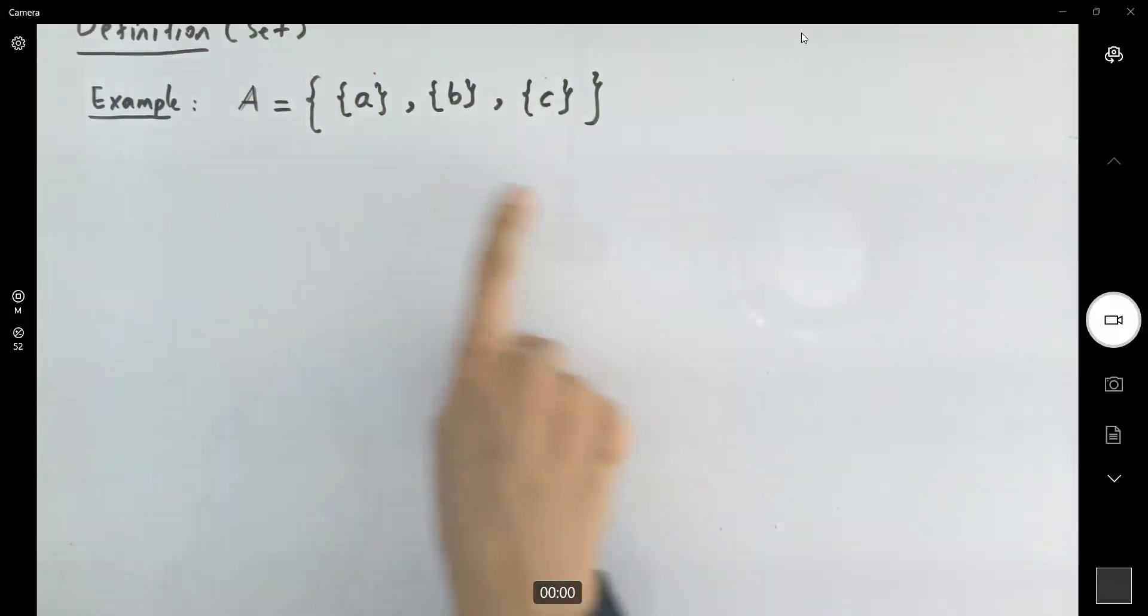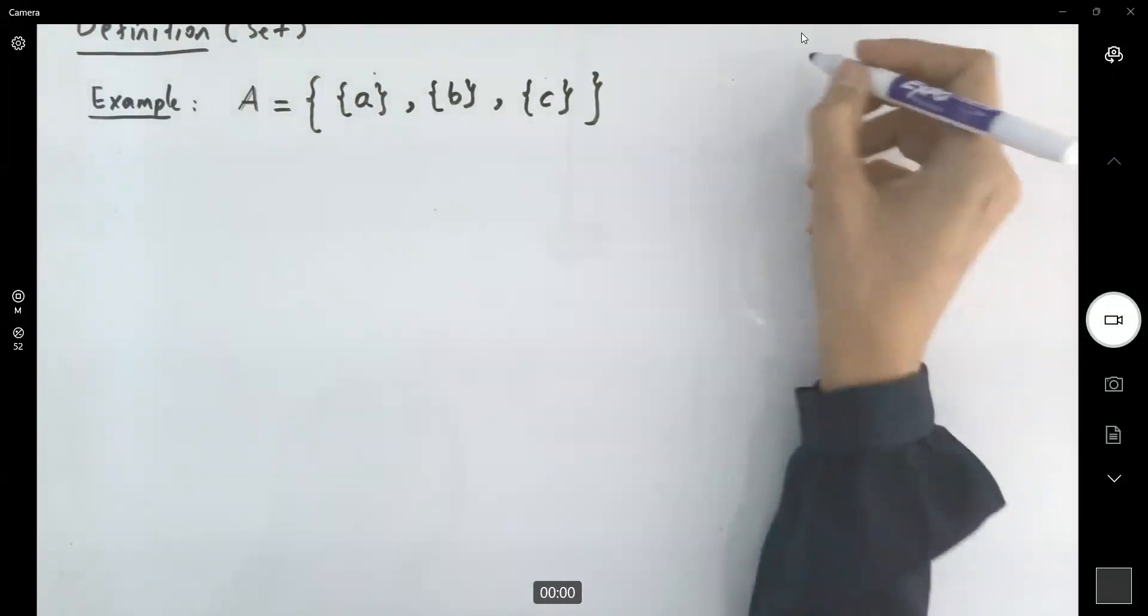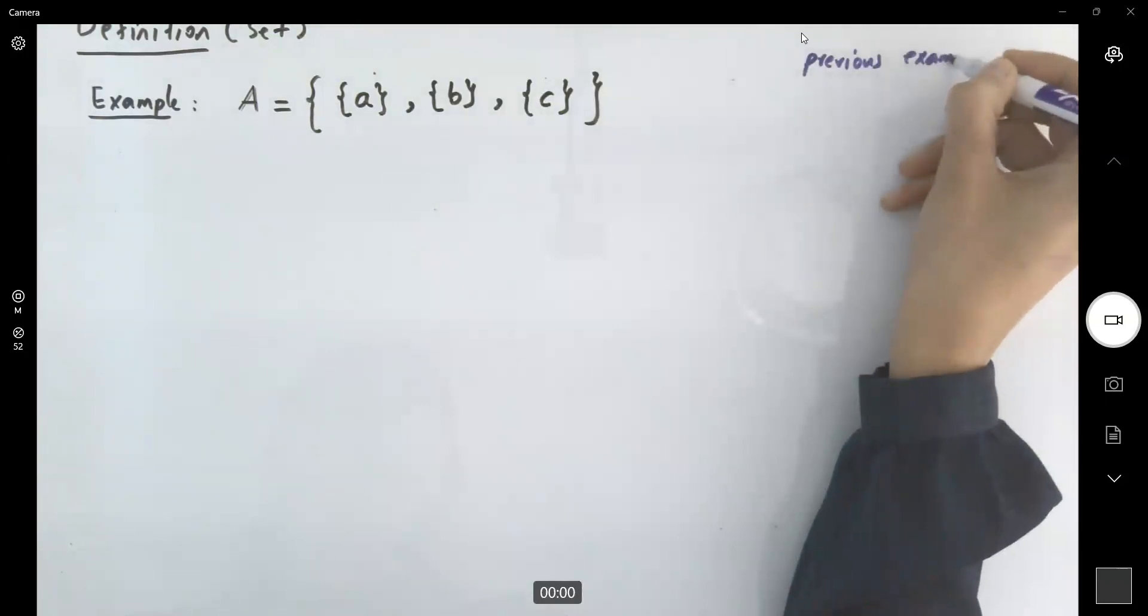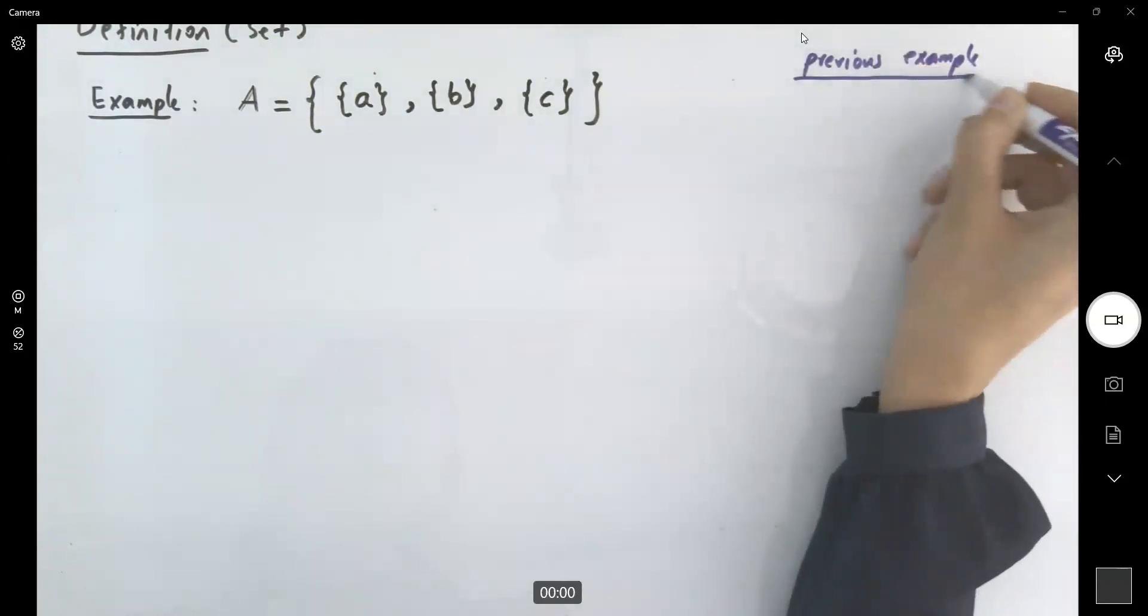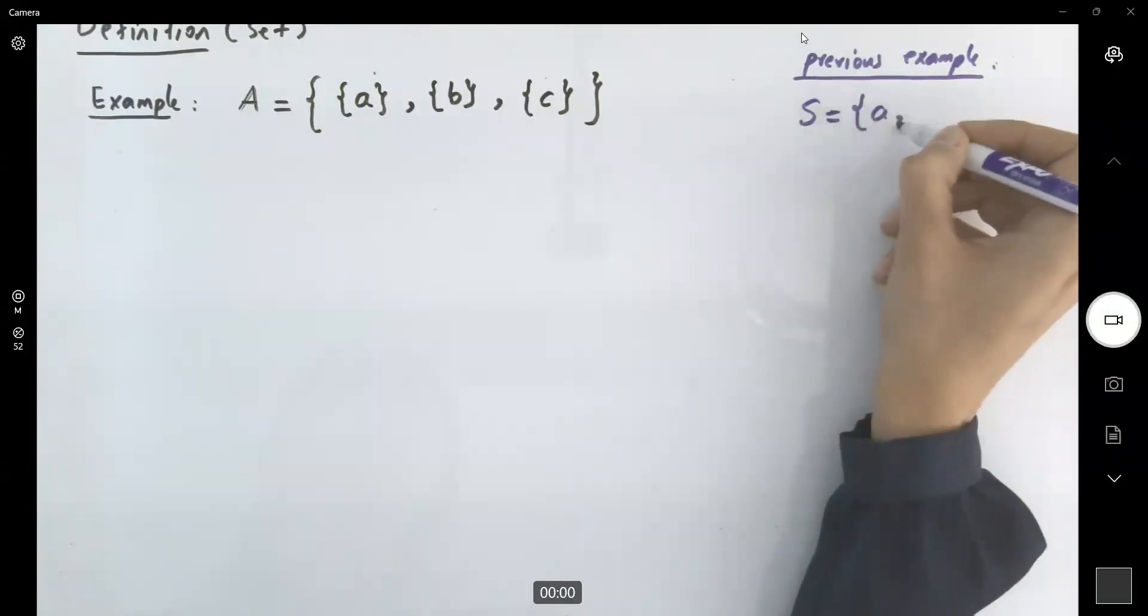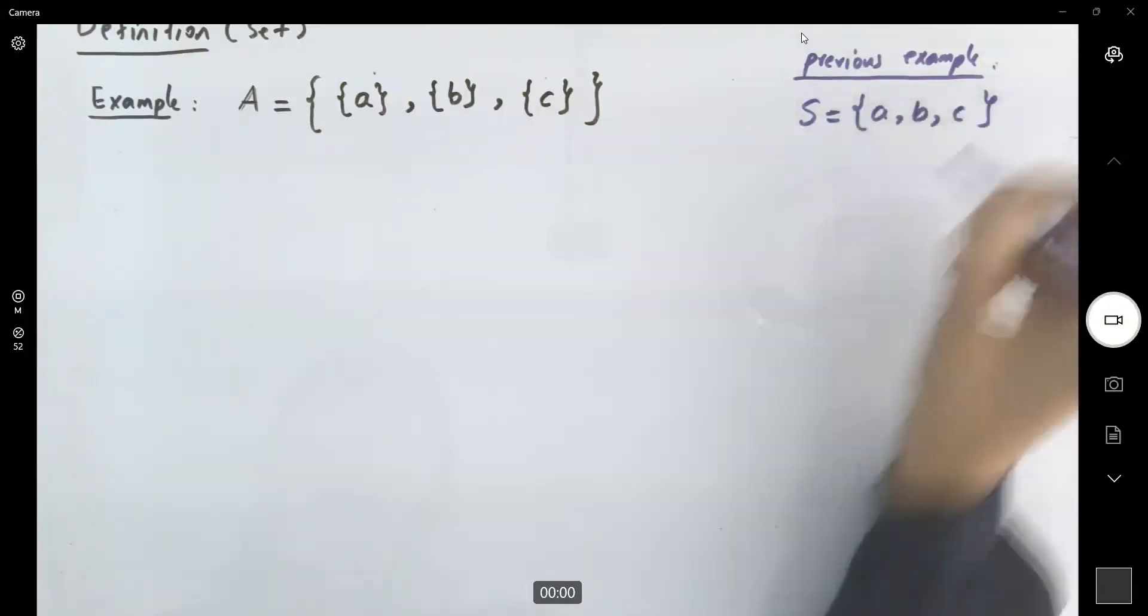Guys, this set is different from the set that we defined in previous example. In previous example, we had set S with elements a, comma b, comma c.